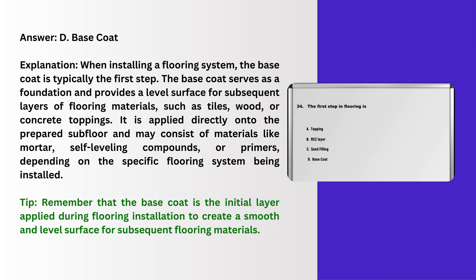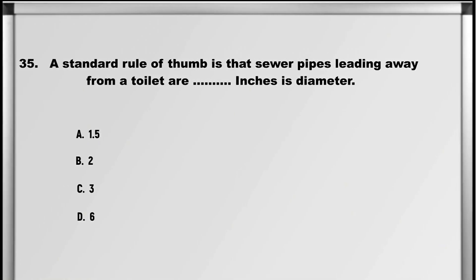Explanation: When installing a flooring system, the base coat is typically the first step. The base coat serves as a foundation and provides a level surface for subsequent layers of flooring materials, such as tiles, wood, or concrete toppings. It is applied directly onto the prepared subfloor and may consist of materials like mortar, self-leveling compounds, or primers, depending on the specific flooring system being installed. Tip: the base coat is the initial layer applied during flooring installation to create a smooth and level surface for subsequent flooring materials.